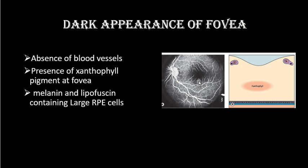The macula appears dark in fundus fluorescent angiography because of two reasons: first, there is absence of blood vessels here — this is the foveal avascular zone; and second, there is presence of xanthophyll pigment at the level of the fovea. The large retinal pigment epithelial cells also contain melanin and lipofuscin. So all the retina gives hyperfluorescence, but the fovea has a dark appearance with neither hyper- nor hypofluorescence.